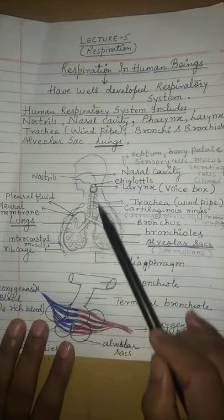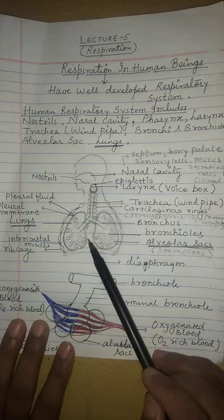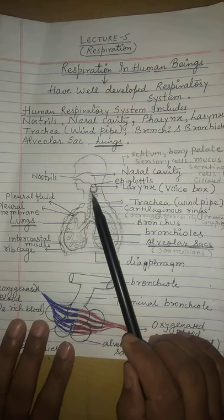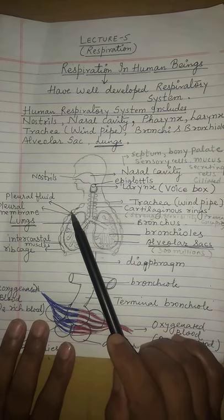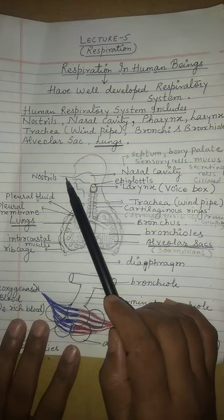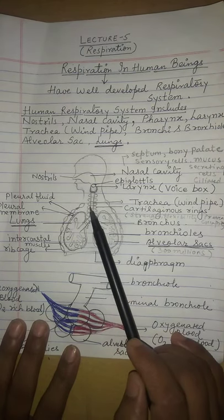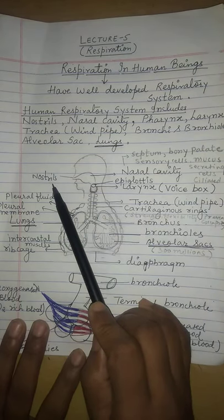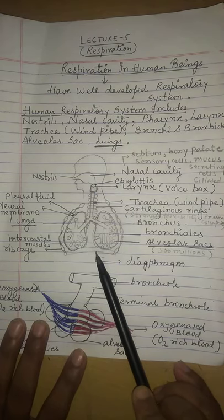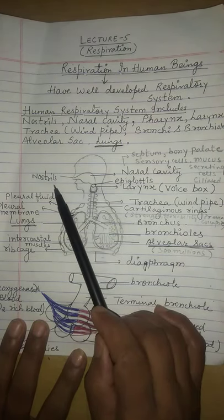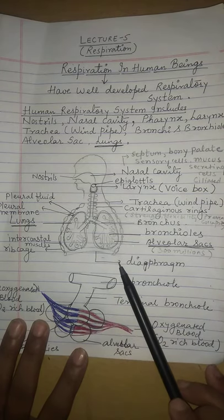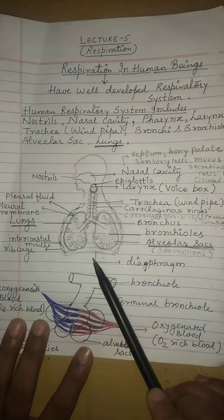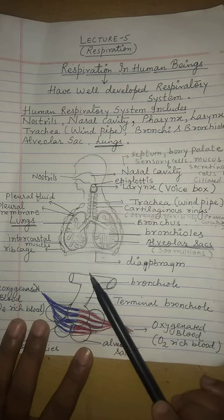I have made a very simple diagram that you can draw easily. The human digestive system starts from the mouth, while the human respiratory system starts from the nostrils and extends from nostrils onwards. The diaphragm divides our body's chest cavity from the abdominal cavity.